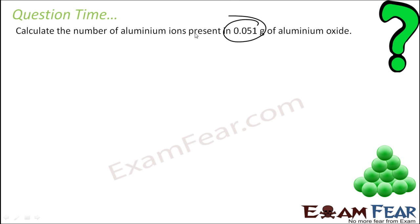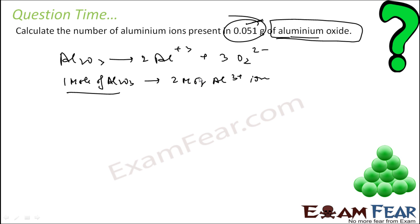Let us take the last question. Calculate the number of aluminum ions present in 0.051 grams of aluminum oxide. Al2O3, you break this into ions, you get 2 aluminum 3 plus and 3 oxygen 2 minus ions. 1 mole of Al2O3 gives 2 moles of aluminum ions. We can find the moles of Al2O3, then moles of aluminum ions, then the number of aluminum ions.